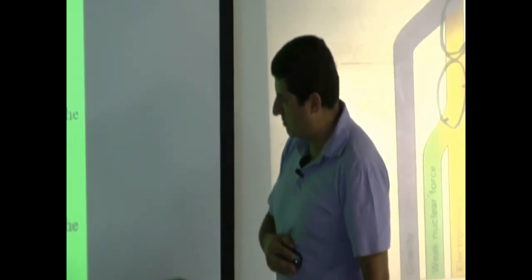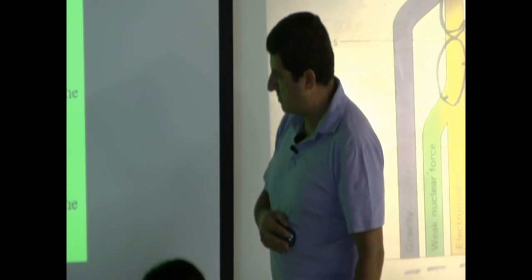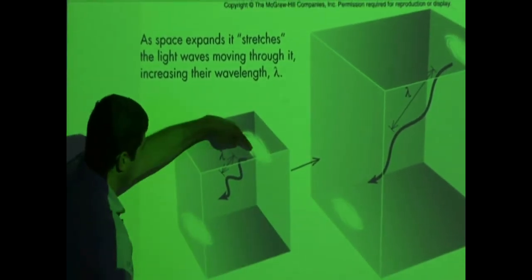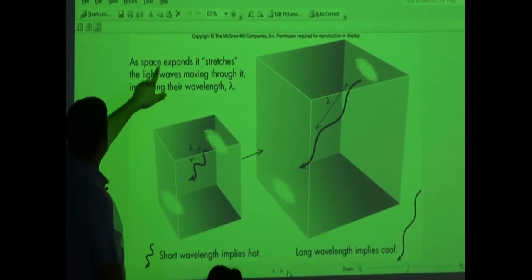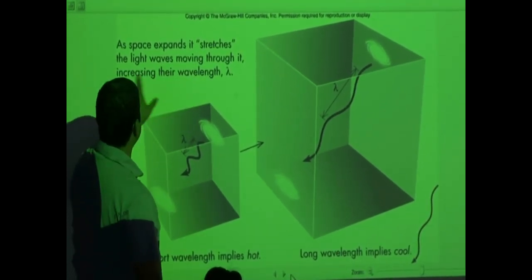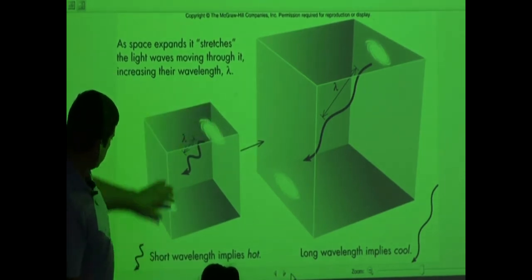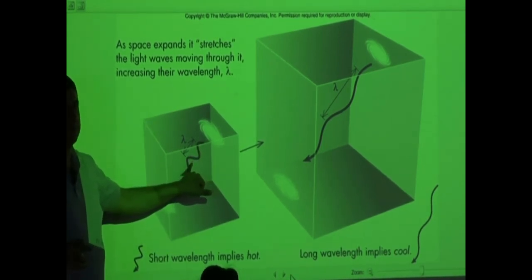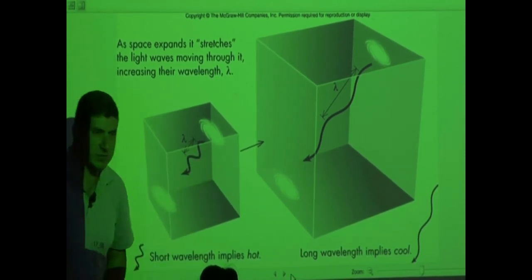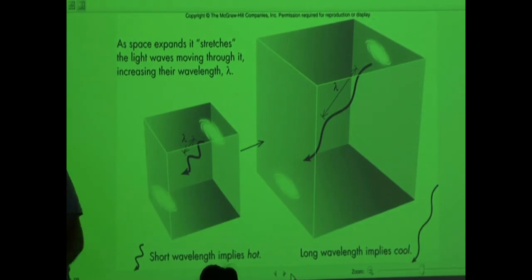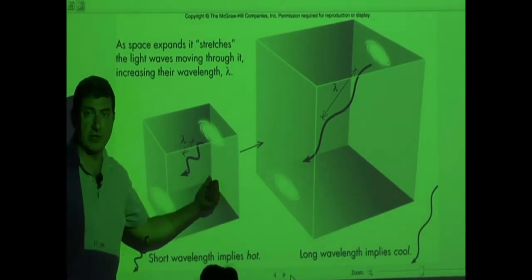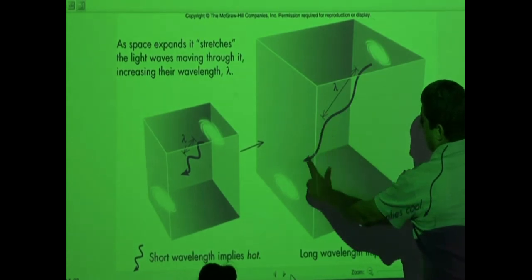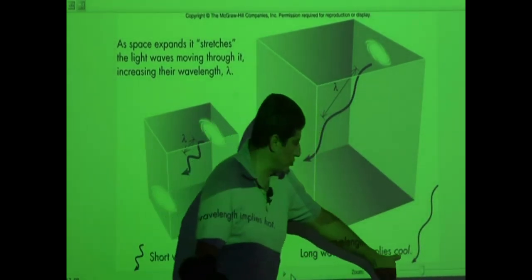Why is it so cold? What tends to happen as space expands and galaxies are radiating — as space expands, it stretches the light waves moving through it, increasing their wavelength. So when you have first very small space, the wavelength is very short. Short wavelength means high frequency, high energy. So the original energy of the universe was very, very high frequency, very high energy.